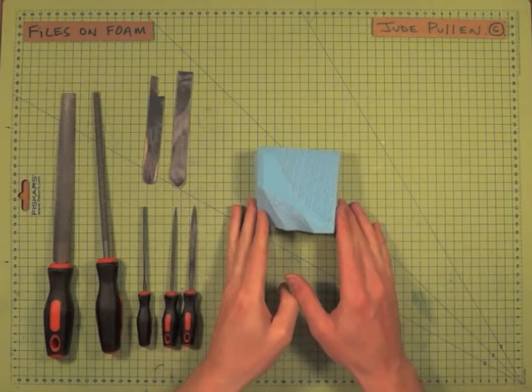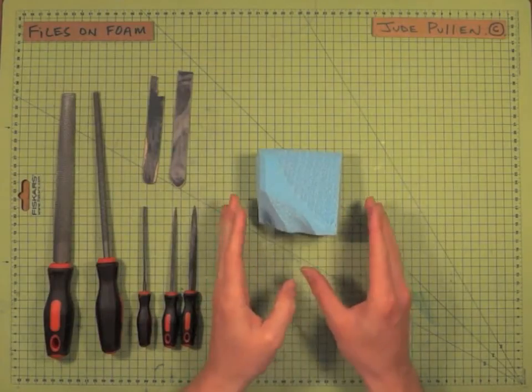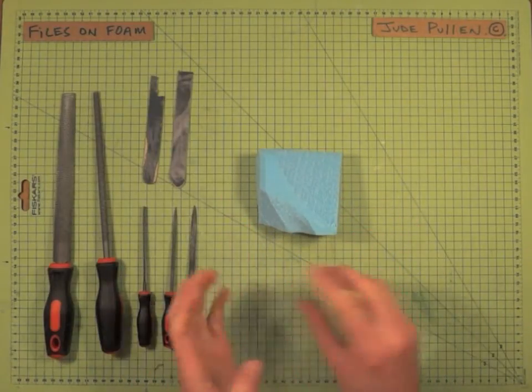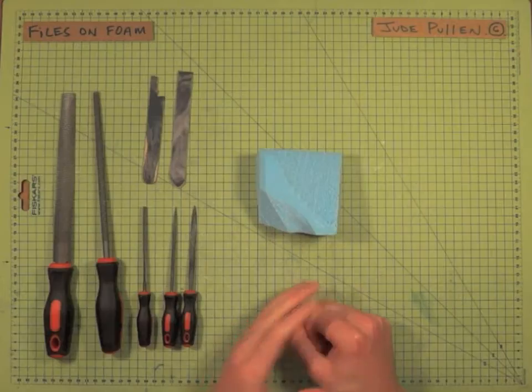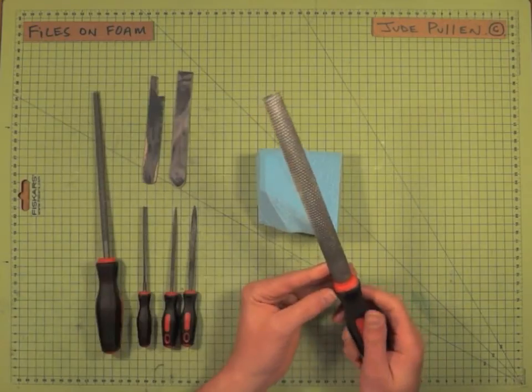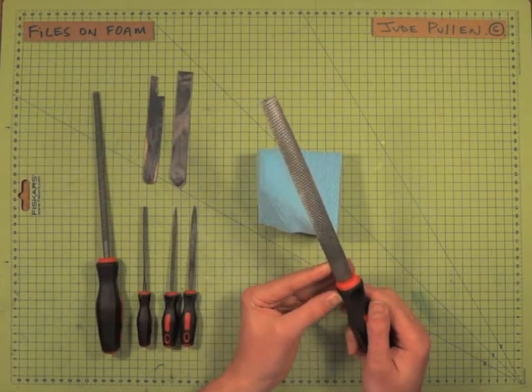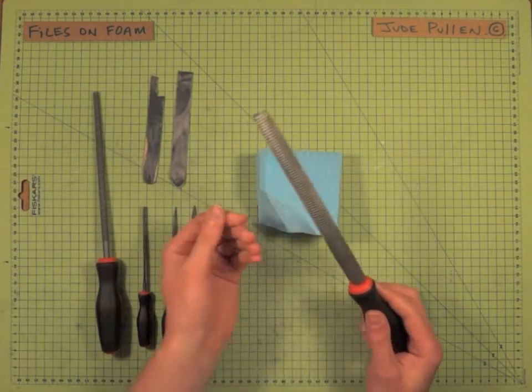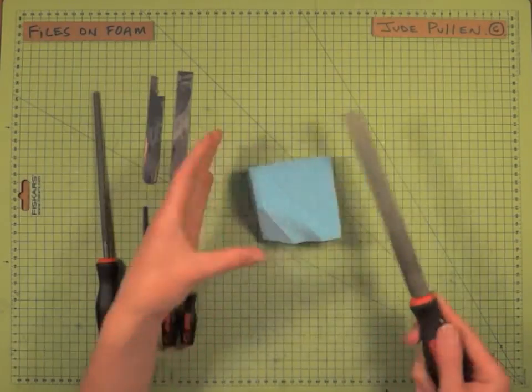Okay, so it's pretty obvious that files can also be used on foam, but I thought I'd go through a few examples of different types and the sort of effect you'll get. Now although this is a file, it's probably fairer to call it a rasp in that it's very, very coarse and aggressive.